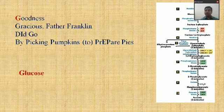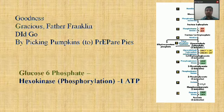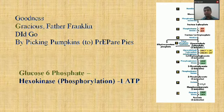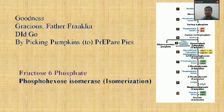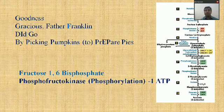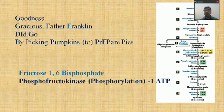'Goodness' stands for glucose. 'Gracious' (G) — glucose is converted into glucose-6-phosphate, enzyme hexokinase, reaction type phosphorylation, loss of one ATP. 'Father' (F) — glucose-6-phosphate is converted into fructose-6-phosphate, enzyme phosphohexose isomerase, reaction isomerization. 'Franklin' (F) — fructose-6-phosphate is converted into fructose-1,6-bisphosphate, reaction is phosphorylation, loss of one ATP, enzyme phosphofructokinase. This covers phase one — the energy investment phase.